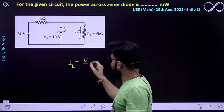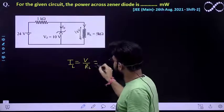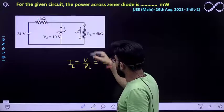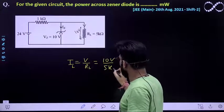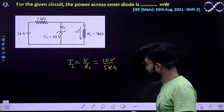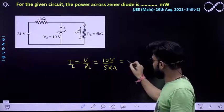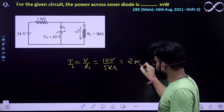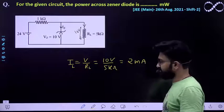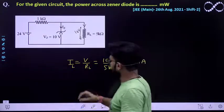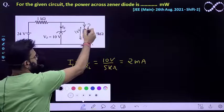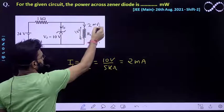I must be equal to V by R. So voltage is 10 volt and load is 5 kilo ohm. Load resistance is 5 kilo ohm. So you will be getting as 2 milliampere. This is the current that we are getting. So that means the current across this load is 2 milliampere.